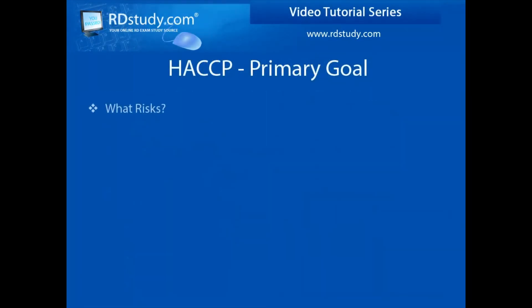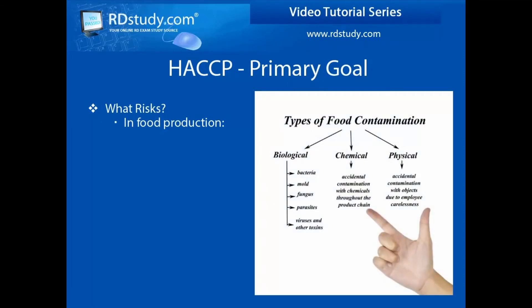A few more points before we start discussing the steps. When it comes to food production, the primary focal point of the food safety plan is minimizing or eliminating any contamination of the food in order to keep it safe for consumers. This will include biological contaminants including bacteria, mold, viruses, parasites, biological toxins, and fungi. Chemical contamination would include the addition of harmful chemical agents into the food supply. Physical contamination is the result of contaminants such as metal shavings from opening a can, or other items falling into the food.